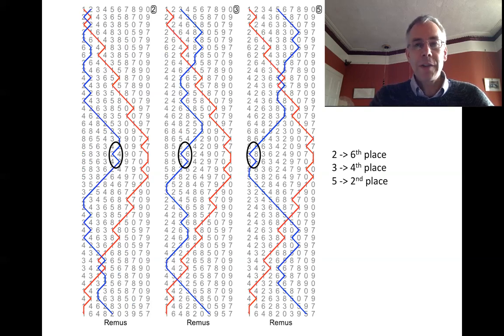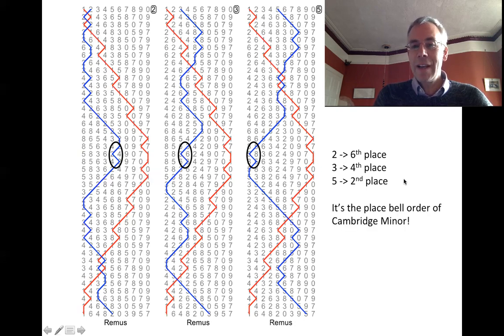Let's have a look at how you can tell when to do the half lead dodge besides just listening to know when the half lead is coming. So let's look at seconds, thirds and fifth placebells and see where they do the half lead dodge and which place they go into at the half lead. So second placebell, half lead dodge five, six down, so it's in sixth place at the half lead. Third placebell, three, four down at the half lead into fourth place. Fifth placebell, one, two down at the half lead into seconds place. And this pattern of two going to sixth place, three going to fourth place, five going to second place. Maybe this looks a little bit familiar. It's the placebell order of Cambridge minor. What is the placebell order of Cambridge minor doing in defining the front work of Remus Surprise Royal? This could be useful.